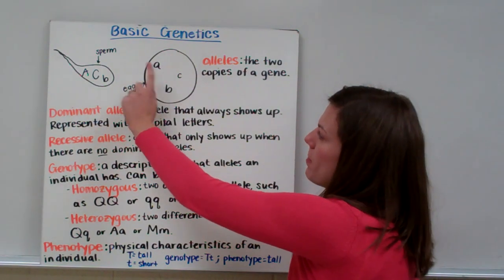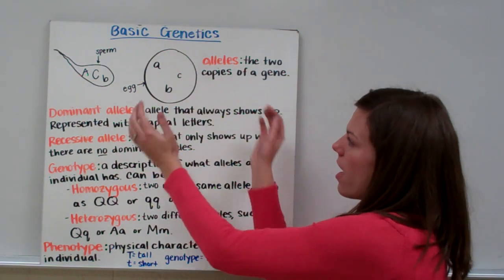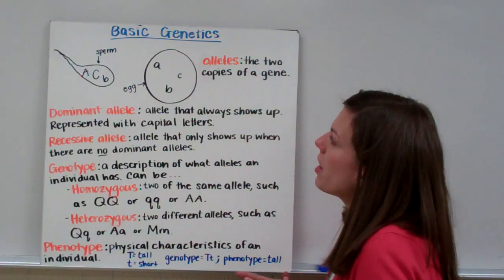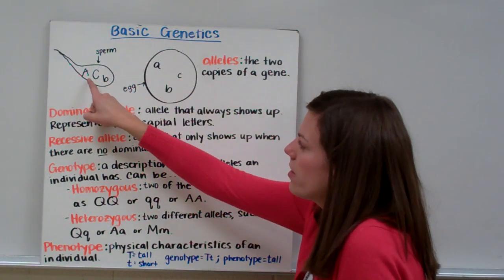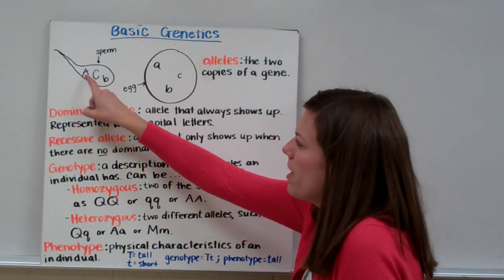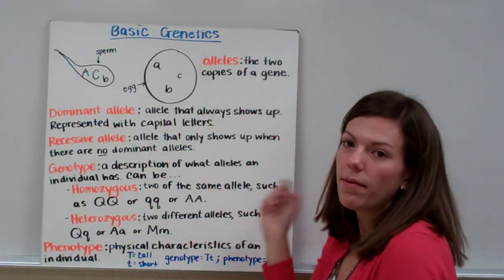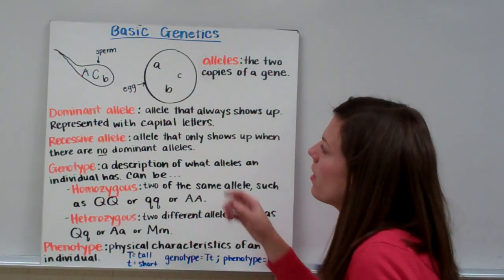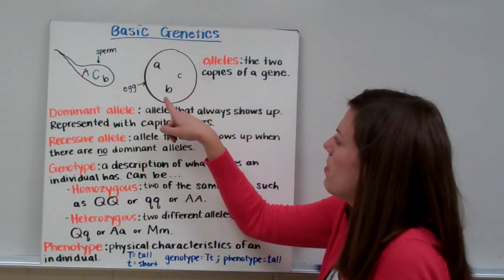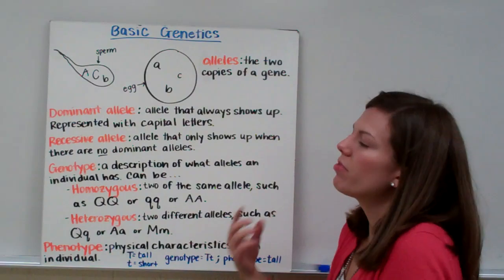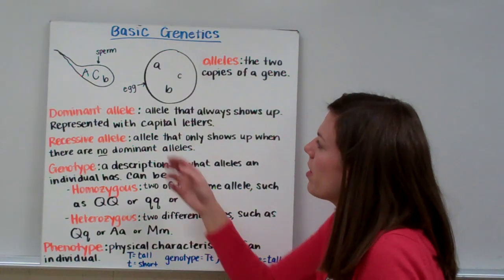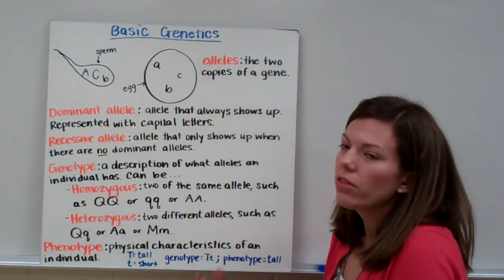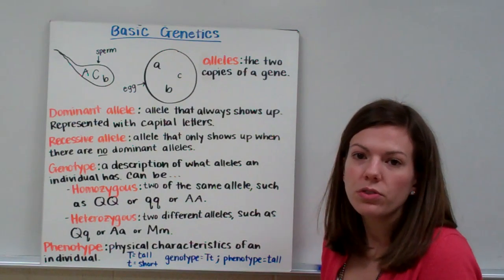You can see we have two copies of gene A when sperm and egg come together in fertilization. Dad gives a big A and Mom gives a little A — those are our two alleles of gene A. Dad gives a little B and Mom gives a little B — those are our two alleles for gene B. Then Dad gives a big C and Mom gives a little C — those are our two alleles for gene C.